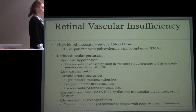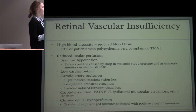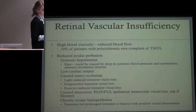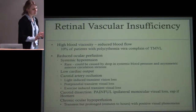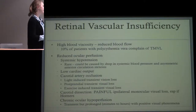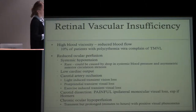Light-induced transient vision loss occurs when insufficient blood flow can't keep up with the higher metabolic demand placed on the retinal system by light stimulation. People describe these episodes occurring in bright light. There are also reports of postprandial transient vision loss — the body directing energy to the digestive system — and exercise-induced transient vision loss, which could be from hypoperfusion.